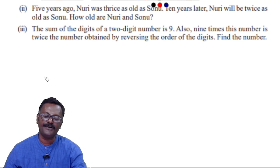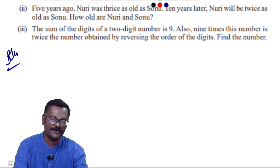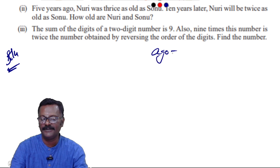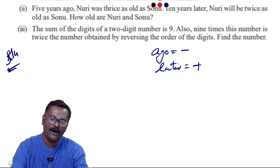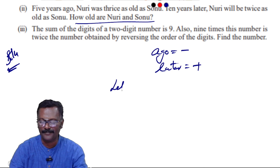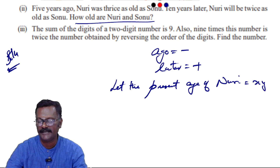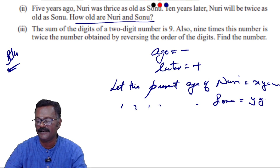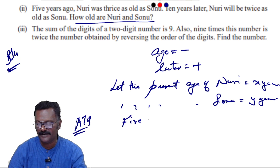Second sub-problem: Five years ago, Nuri was thrice as old as Sonu. Ten years later, Nuri will be twice as old as Sonu. How old are Nuri and Sonu? For age problems, 'ago' means we subtract and 'later' means we add. Let the present age of Nuri be x years and the present age of Sonu be y years.